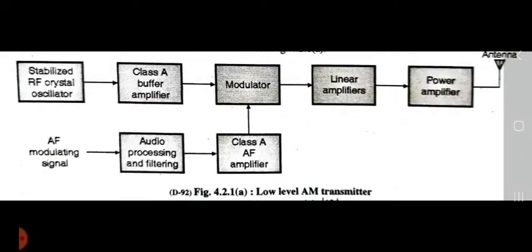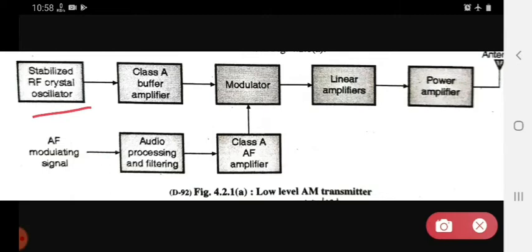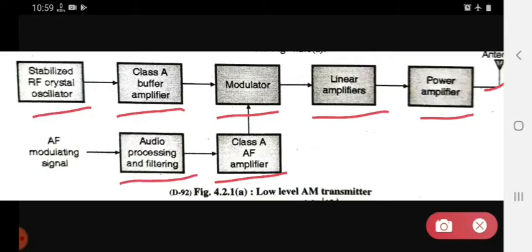This is the block diagram of the low level AM transmitter. In this, the first block is the stabilized RF crystal oscillator, then class A buffer amplifier, modulator, linear amplifier, power amplifier, and antenna. On the other path: class A AF amplifier, audio processing and filtering, and AF modulating signal.